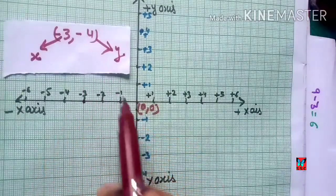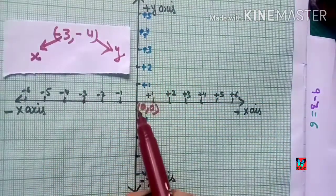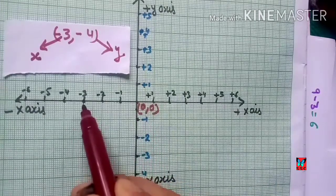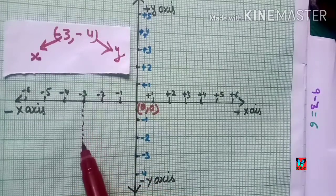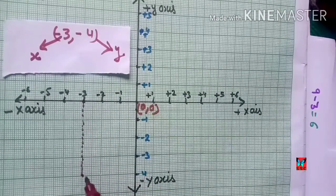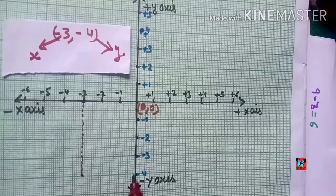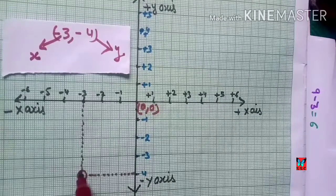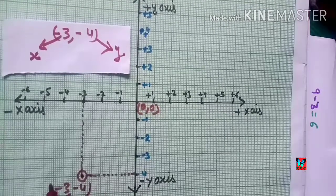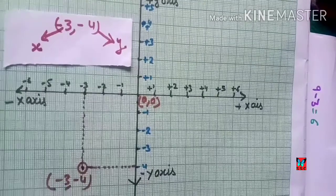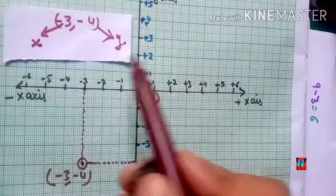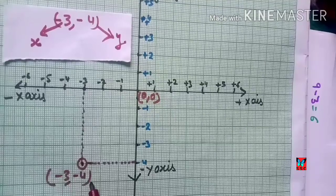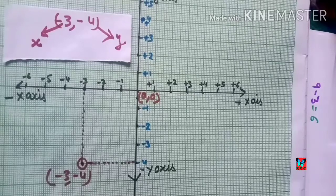Going to minus three on the x-axis and minus four on the y-axis, where both lines intersect, that is our point (-3, -4). Since both x and y are negative, this point lies in the third quadrant, where x is negative and y is also negative.